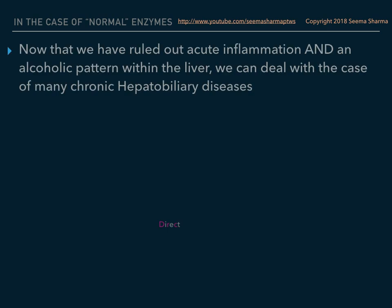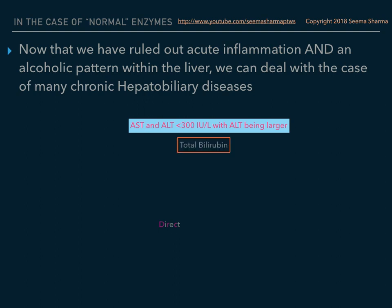If the previous findings did not apply, that means we have ruled out acute inflammation and an alcoholic pattern, so we can consider chronic hepatobiliary diseases as the diagnosis. In that case, the AST and ALT will be less than 300, with the ALT holding its normal pattern of being larger. You then look at the bilirubin — if the total bilirubin is elevated, you want to see whether it is the indirect or direct fraction that is elevated.